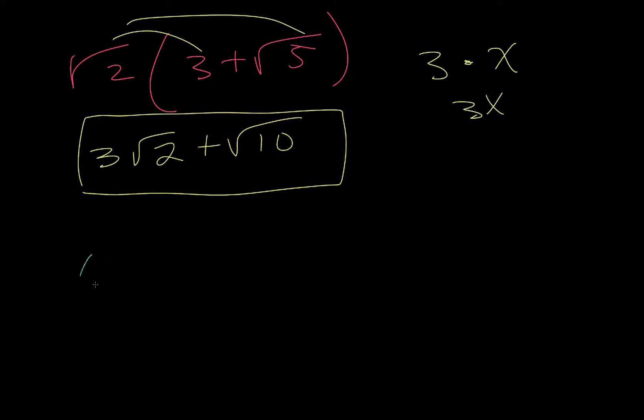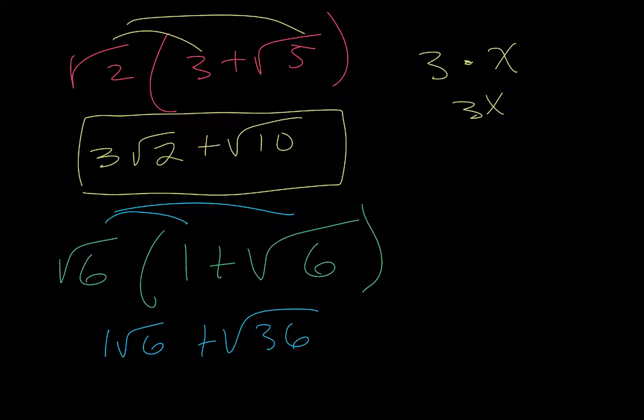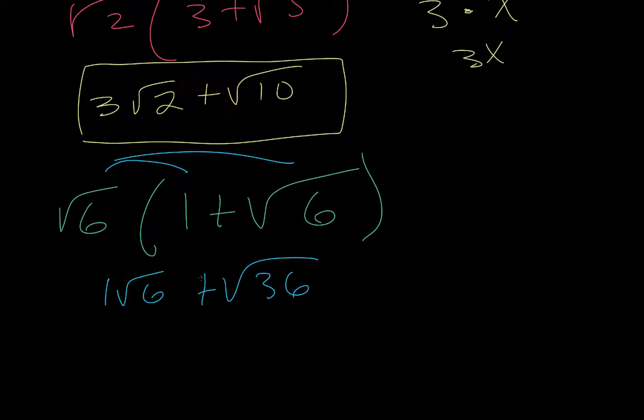So let's just try one more like this. So we have the square root of 6 times 1 plus the square root of 6. So once again, we distribute. 1 times the square root of 6 would be 1 square root of 6. And then 6 times 6 would be 36. Now, both of these can be simplified. So having a 1 out in front is redundant in this situation, so we just want to write this as the square root of 6.